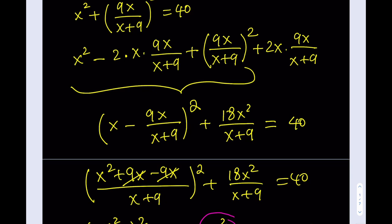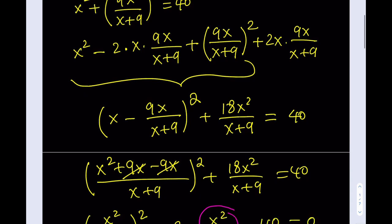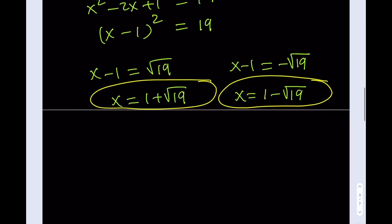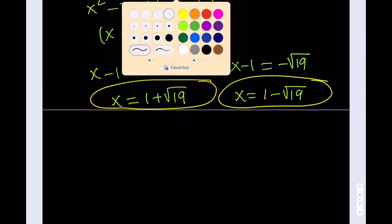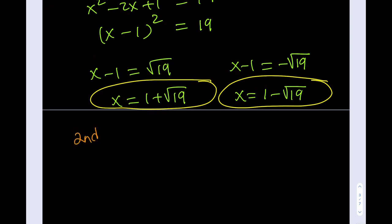Now, I told you at the beginning that I was going to show you two methods. So let's go ahead and talk about our second method, which is kind of cool. And hopefully, this will give you a chance to compare two methods and decide which method is better for you. Now, my original equation was x squared plus 81x squared divided by x plus 9 quantity squared, and that was equal to 40, I think.